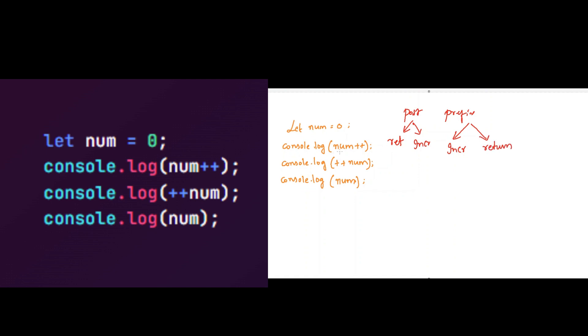In the second line, we are using postfix operator. The postfix operator will return the value. What is the current value of num? Zero. So zero will be logged into the console and then it will increment the value. Once it completes execution of the second line, it will move to the next line. During this process, it will increment the value, so the current value of num will become 1.